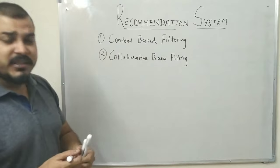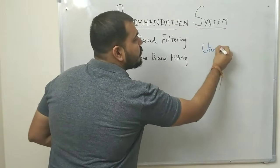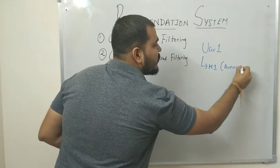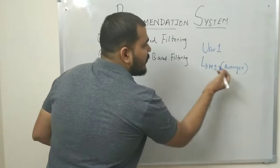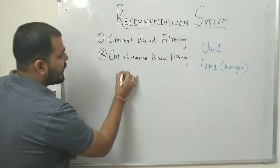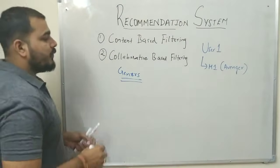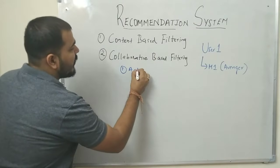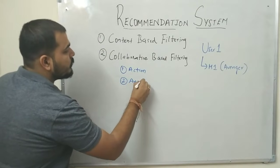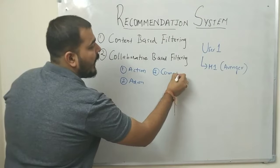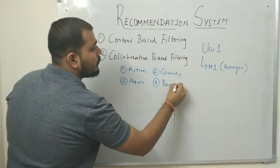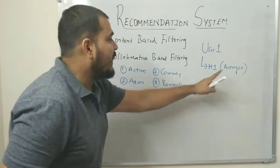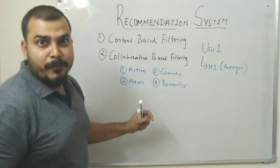Let's understand content-based filtering with an example. We have User 1 who has seen movie M1 — say, Avengers. Movies are divided into genres: action, adventure, comedy, and romance, among others. Avengers can be categorized as an action movie. User 1 also sees movie M2, which is an adventure movie.